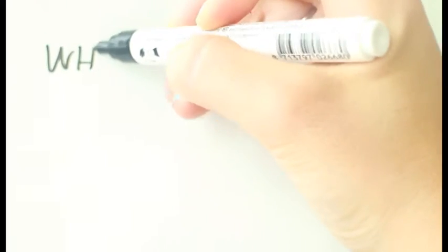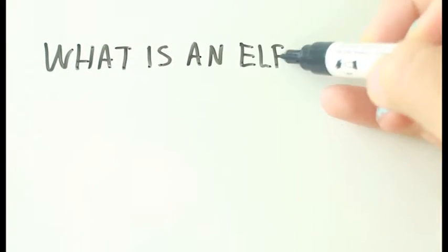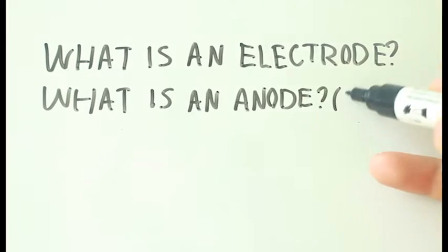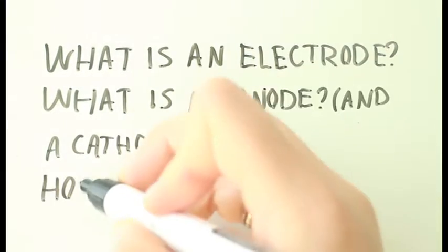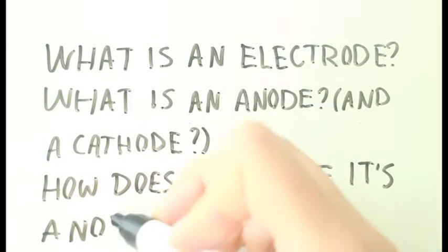So now that we caught your attention, this is the video which will explain what is an electrode, what is an anode and a cathode, how does MSA make its anodes.